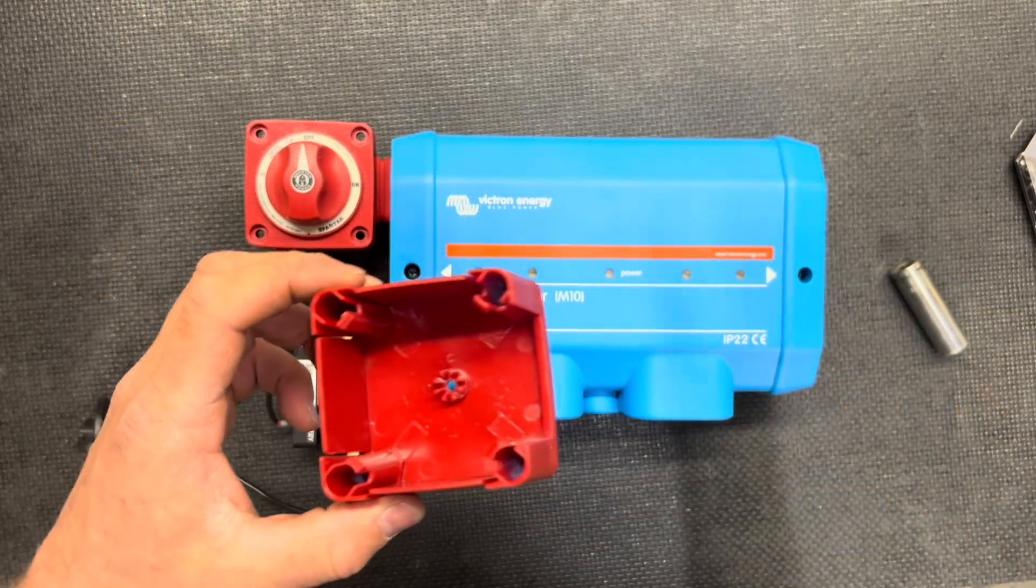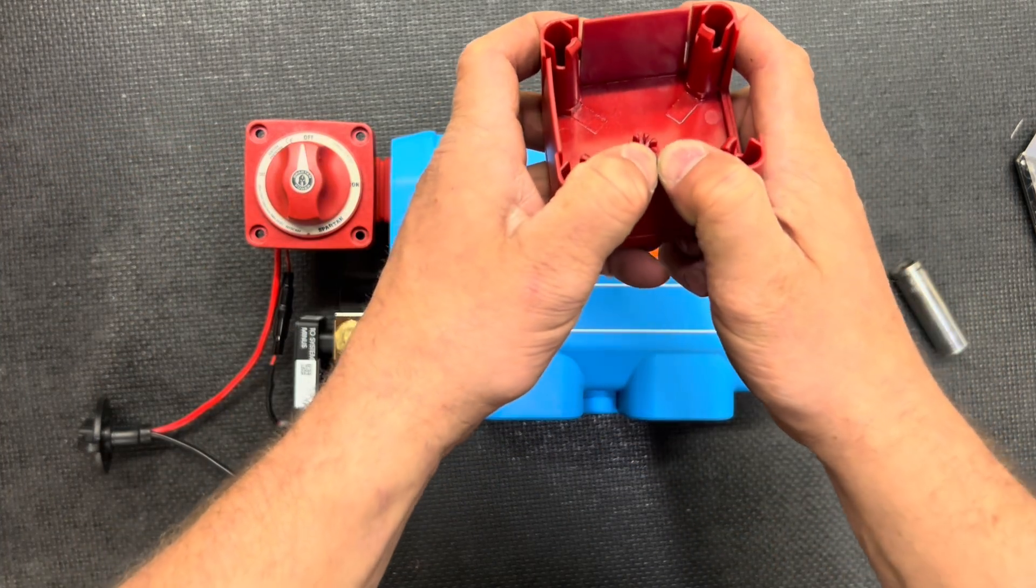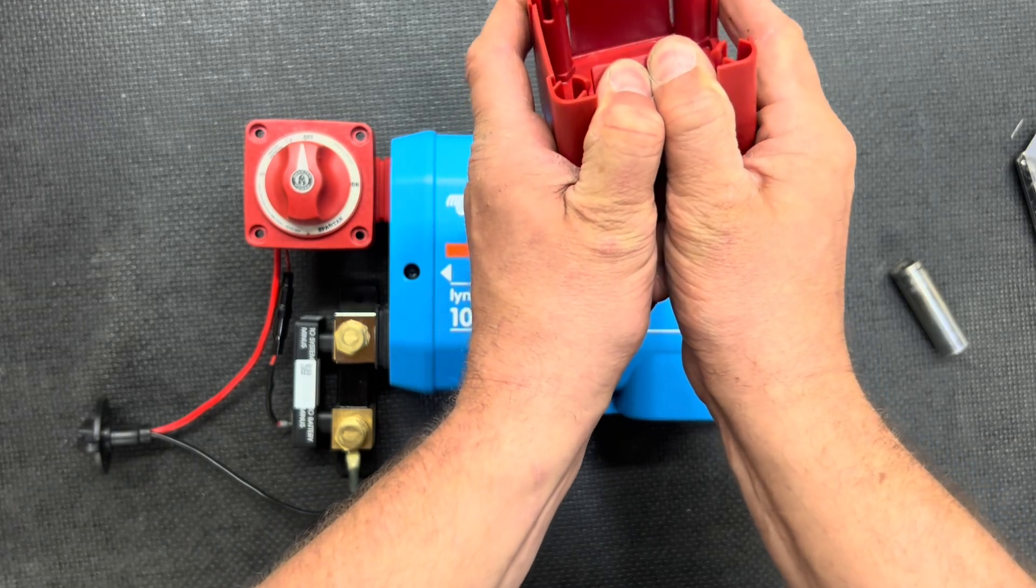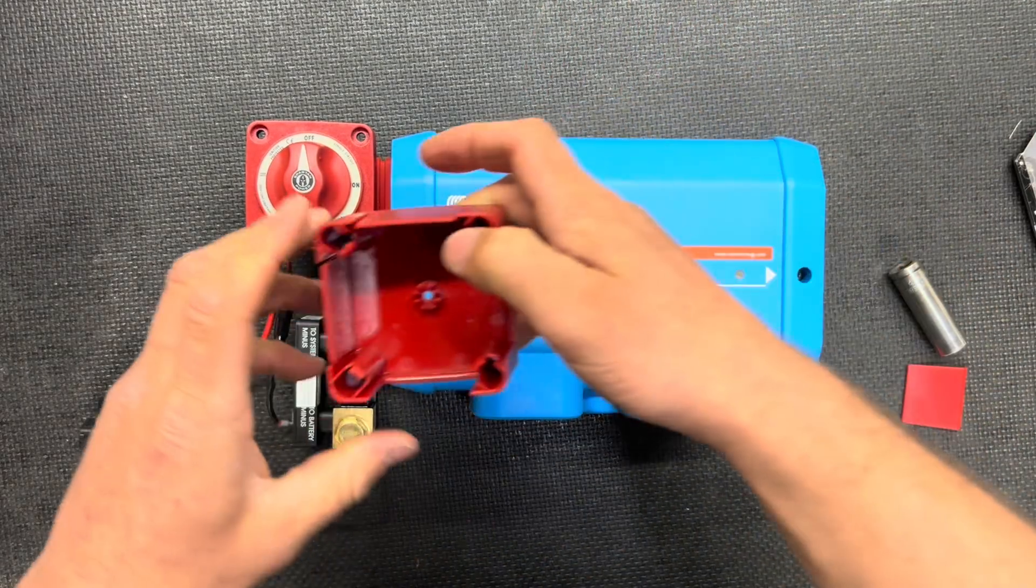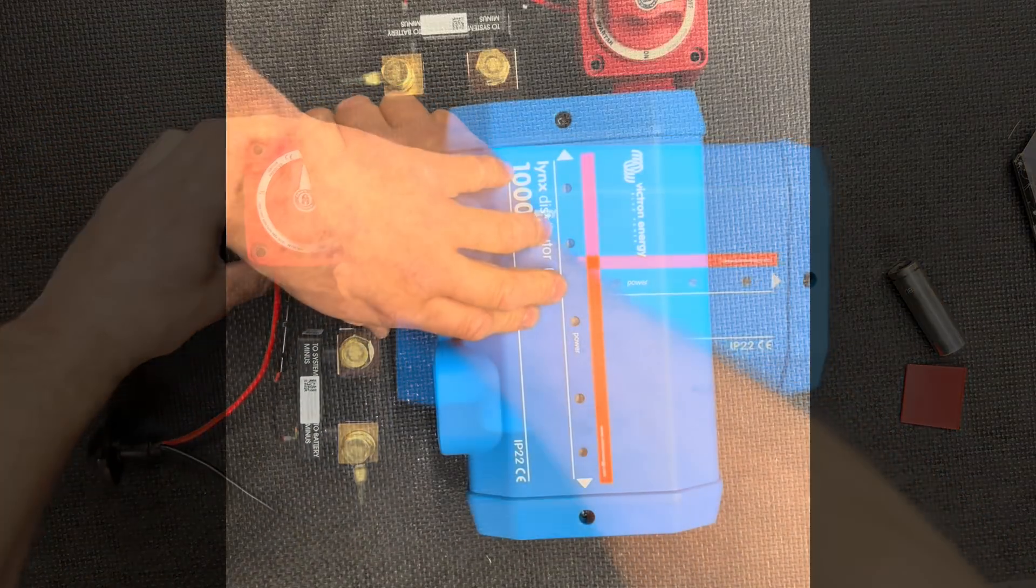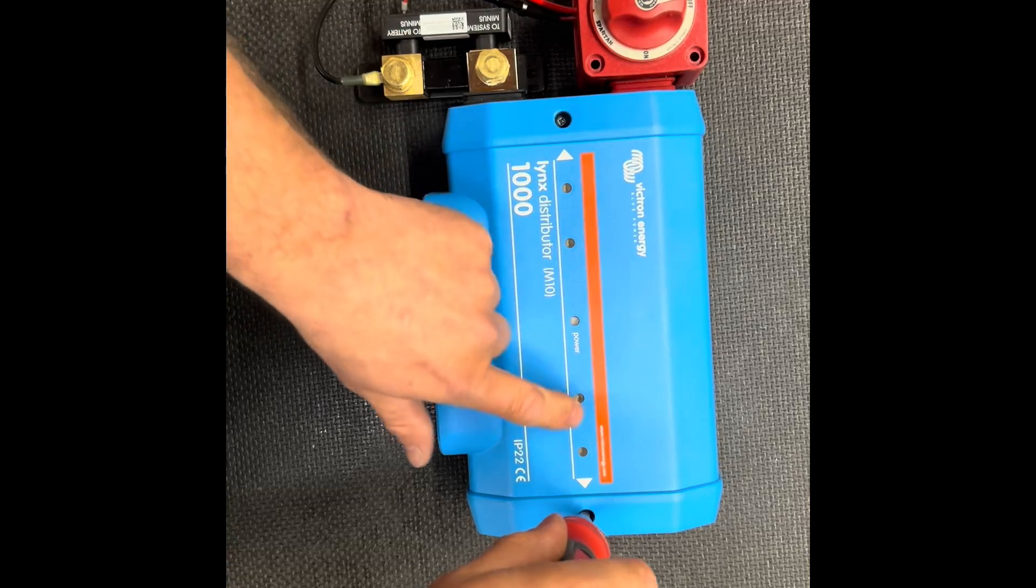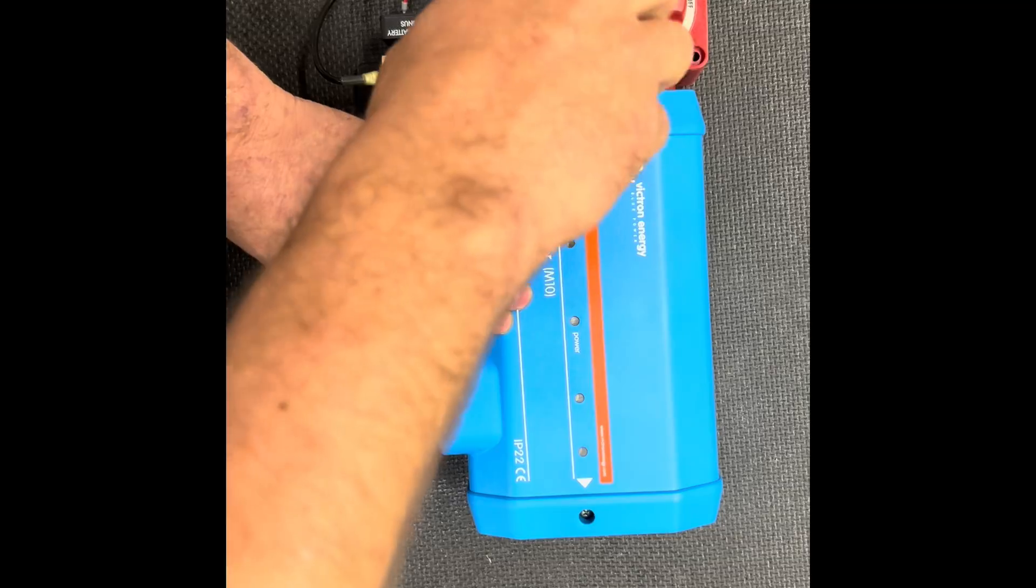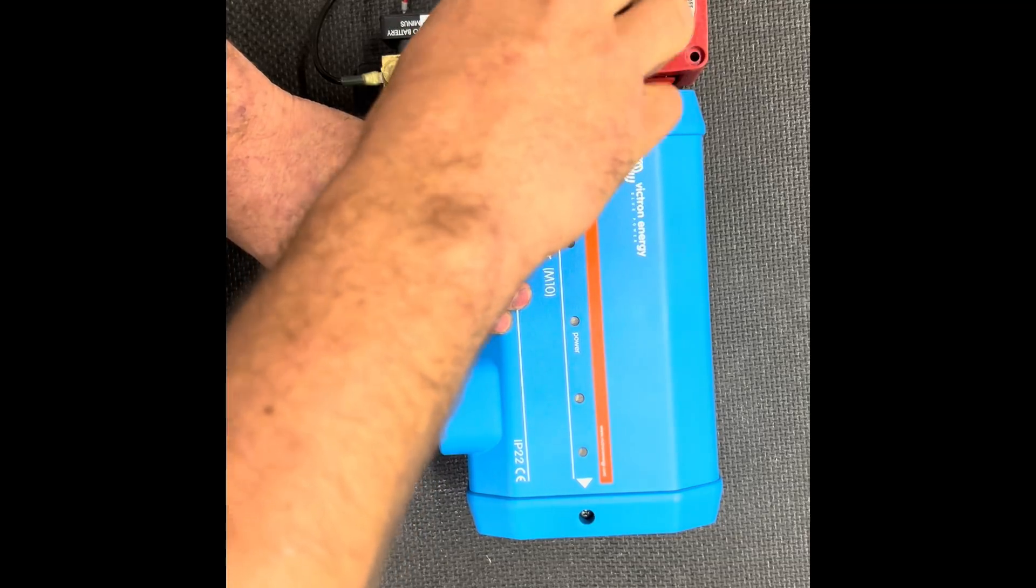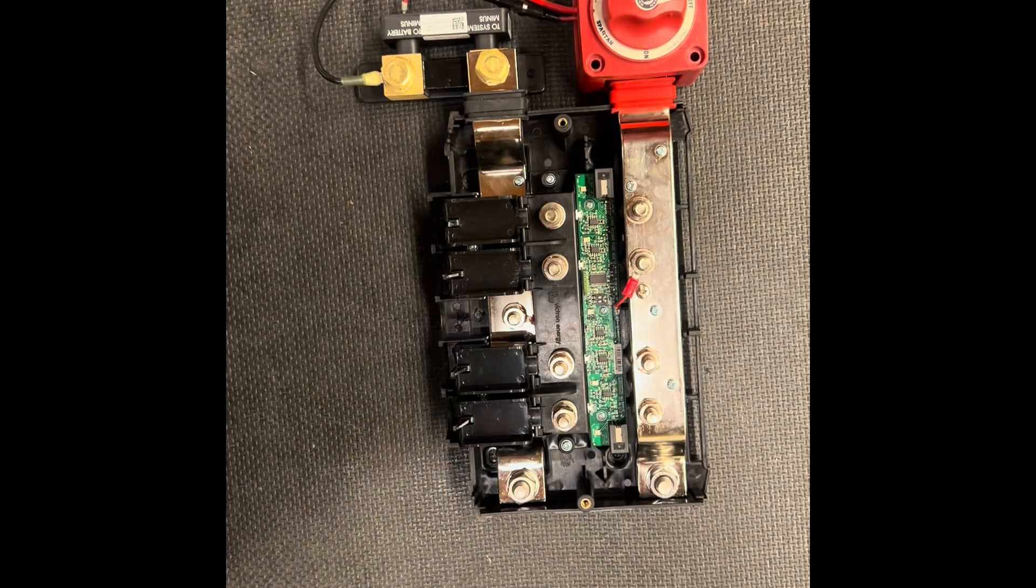I'm going to orient this correctly so it's going to be like this. I'm going to actually remove this piece here - this is going to enable us to put this back on the case. If you're watching this video you're probably aware that these lights here, which are indicators of the fuses being blown, will not work unless you have either the lynx PMS or the lynx shunt. So in order to get this to work...